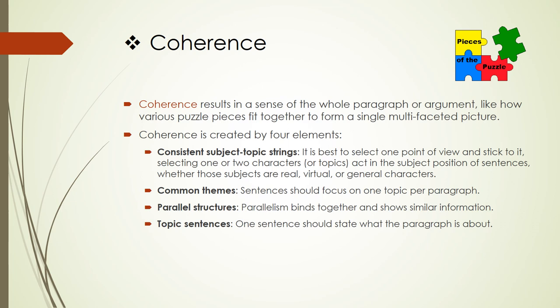Coherence suffers whenever a draft shifts confusingly from one point of view to another, or from one verb tense to another, or from one grammatical subject to another. Readers gain a sense of the coherent whole when all sentences in a passage begin with similar information — consistent grammatical subjects, point of view, and theme — all under the heading of a topic sentence that orients the reader. To create coherent paragraphs, writers should give the passage consistent subject-topic strings, making the topic the grammatical subject of most sentences. Writers usually do this by choosing consistent characters and making those main characters the subjects of most sentences, applying the principles of clarity from prior style lessons.